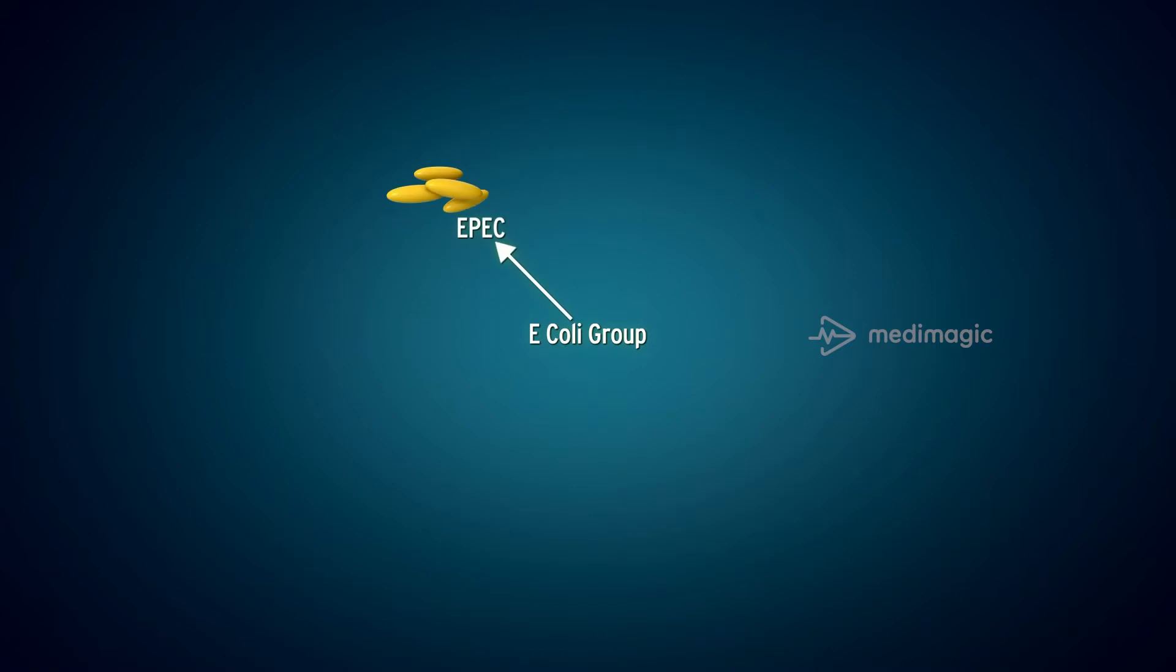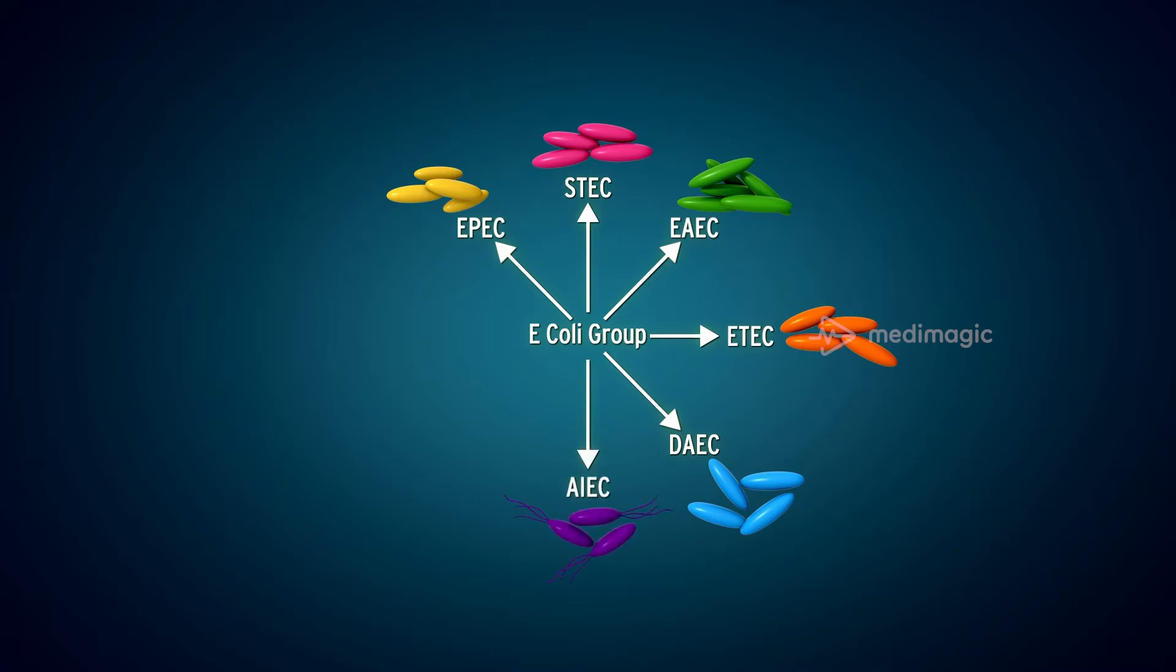Enteropathogenic E. coli or EPEC, Shiga Toxin E. coli or STEC, Enteroaggregative E. coli or EAEC, Enterotoxigenic E. coli or ETEC, Diffusely Adherent E. coli or DAEC, Adherent Invasive E. coli or AIEC, Enteroinvasive E. coli or EIEC, and Enterohemorrhagic E. coli or EHEC.